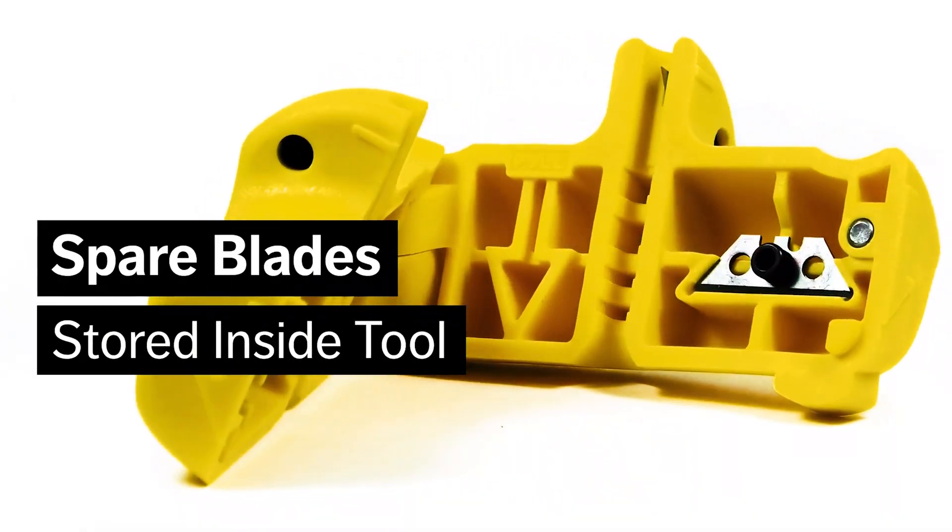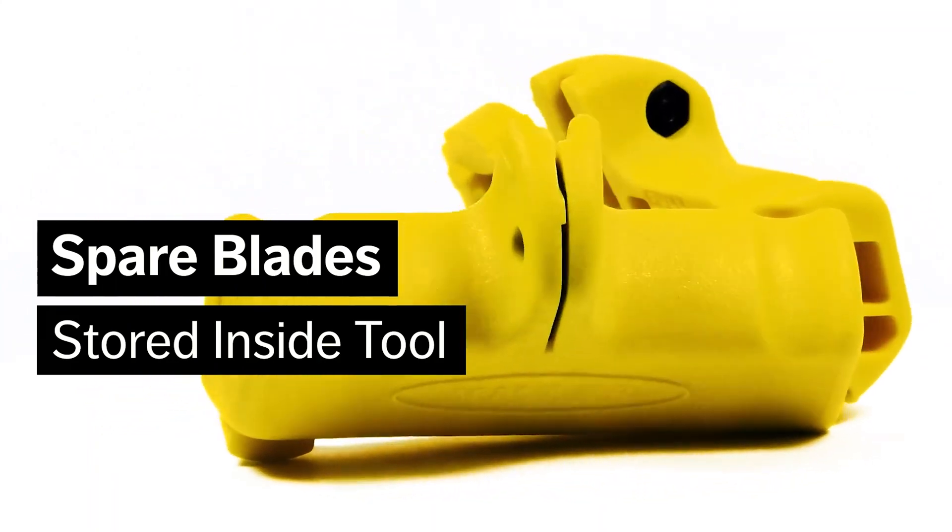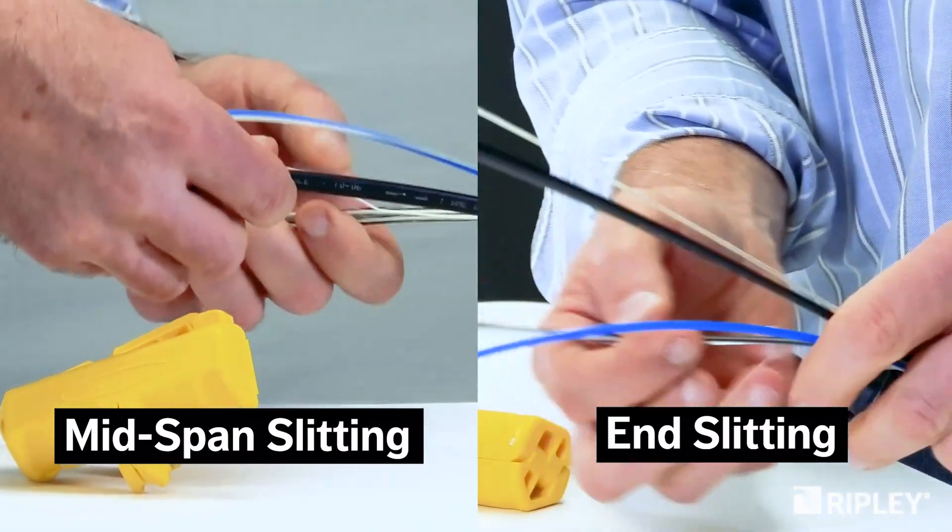Two reversible spare blades and an installation tool are conveniently stored inside for easy access. Reversible precision blades easily cut through the jacket without damaging the fiber.